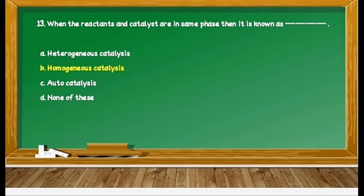Question 33 is on classification of catalysts: When the reactant and catalyst are present in the same phase, then it is called as dash dash. We know that if the reactant and catalyst are present in the same phase, then we call it homogeneous catalysis. If they are in different phases, then we call it heterogeneous catalysis. Therefore, for this question, the answer is homogeneous catalysis, and the second option is correct — option B.